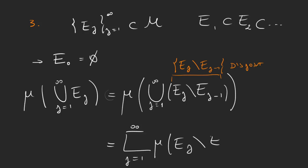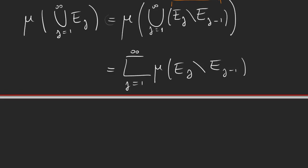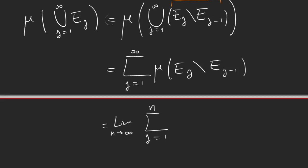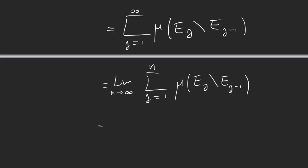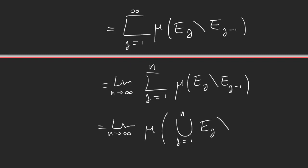The sum is the measure of e sub j minus e sub j minus 1. An infinite sum is the same as the limit when n tends to infinity of the partial sum from j equals 1 up to n — that is just the definition. And because these sets are disjoint, we can rewrite this as the limit when n tends to infinity of the measure of the union up to n from j equals 1, of e sub j minus e sub j minus 1. We used the same thing we did before: the sum of measures of disjoint sets can be written as a measure of the union.